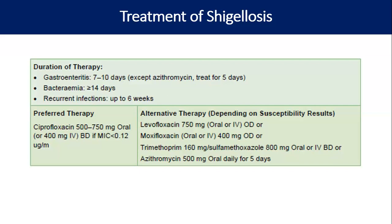For Shigellosis, duration of treatment is 7–10 days except for azithromycin, which is 5 days. If there is associated bacteremia, it is at least 14 days, and for recurrent infections treatment can be extended up to 6 weeks. Preferred therapy is ciprofloxacin; alternatives are levofloxacin, moxifloxacin, cotrimoxazole, and azithromycin — but azithromycin is for no more than 5 days.